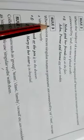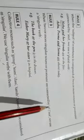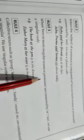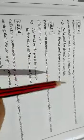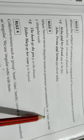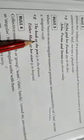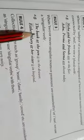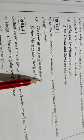Rule 3 says: when two or more singular nouns or pronouns are connected by 'or' or 'nor,' we use a singular verb. If the nouns or pronouns are joined not with 'and' but with 'or' or 'nor,' then we use a singular verb. For example: 'The book or the pen is in the drawer.' Here, 'the book or the pen' — meaning one of the two is in the drawer — so we use the singular verb 'is.'